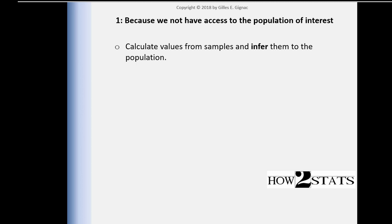We want to make those inferences to large populations because we're not interested in small niche groups typically. So we want to infer those results from the sample to the population, and that's what we call inferential statistics, which will form the backbone of much of this textbook.